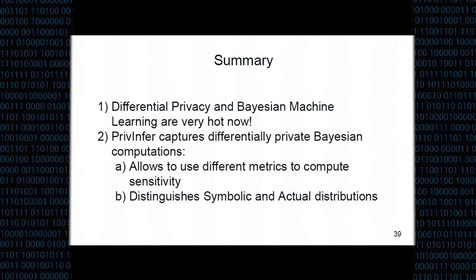Question from the audience: How do you define inference for PRIV-INFER? Is it any algorithm that determines the posterior distribution given a prior? Answer: We are totally abstract with respect to this. PRIV-INFER is a type system that can be applied to languages that have a symbolic inference algorithm. We don't prescribe a specific inference algorithm — we build on top of it and give a type system that allows verification of differential privacy in those situations.